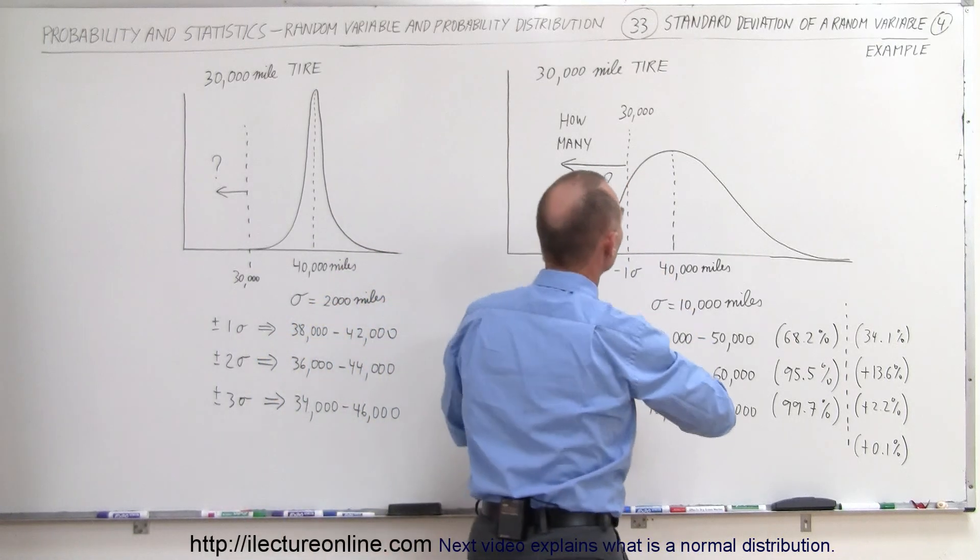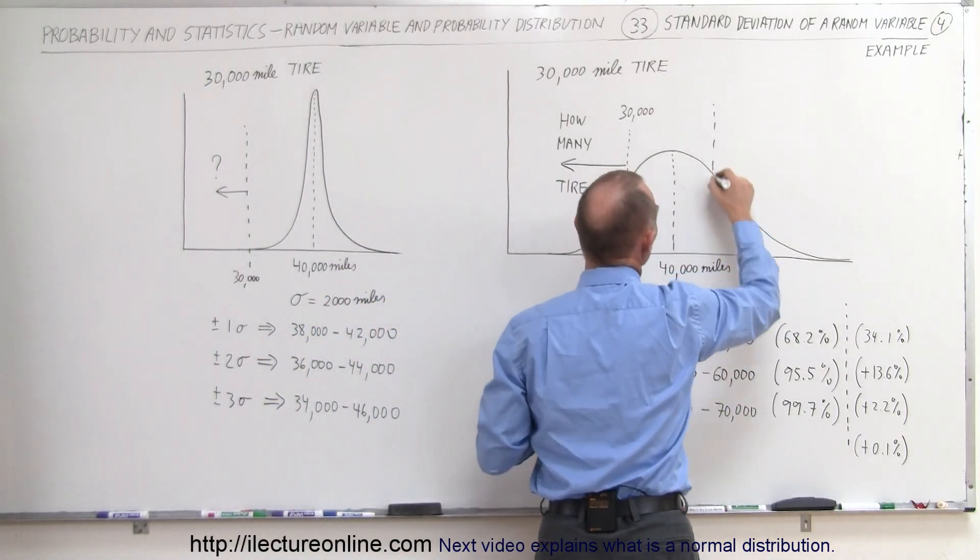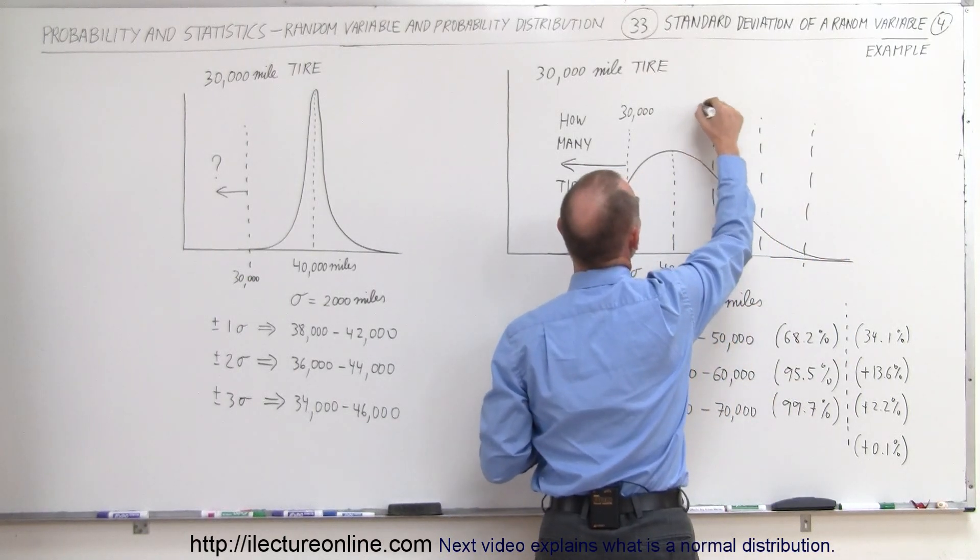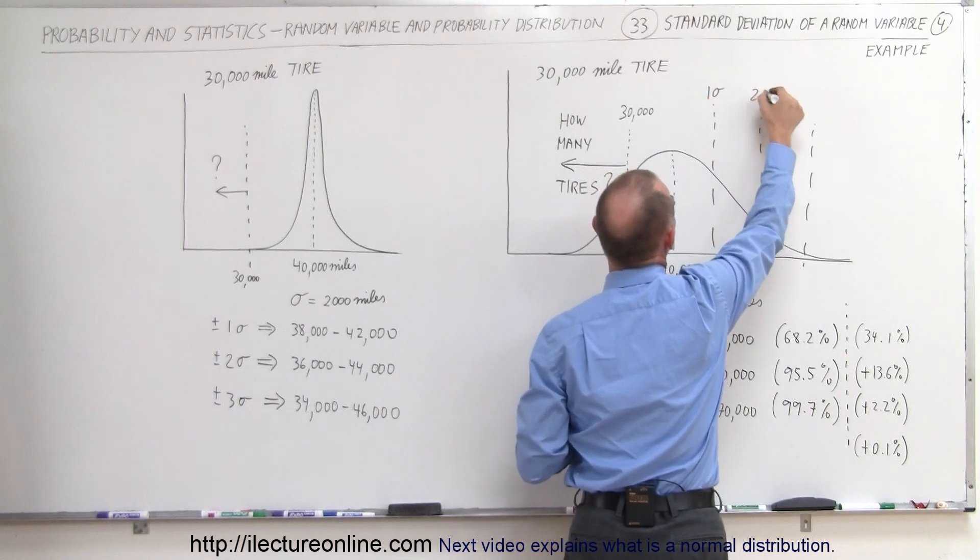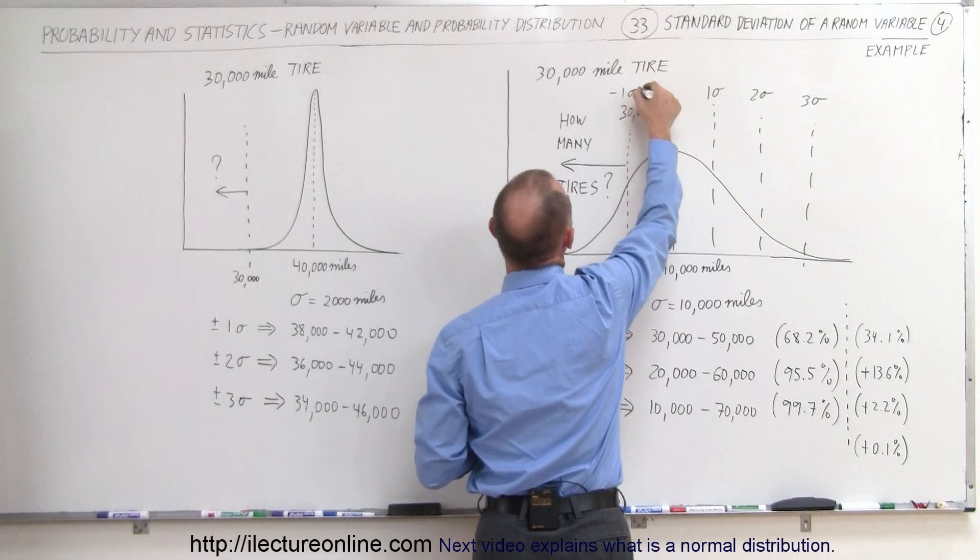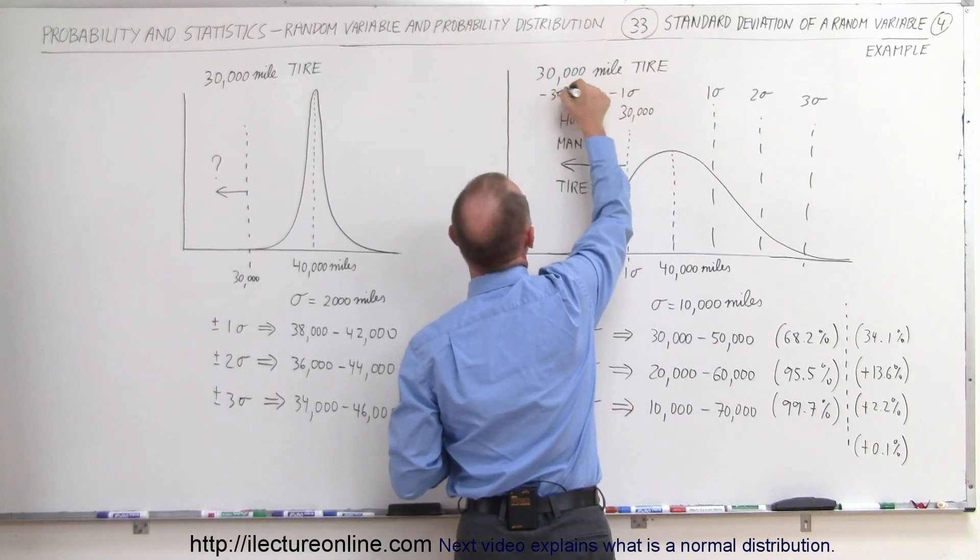So if we divide the graph into these regions of one sigma, two sigma and three sigma, so this is plus or minus one sigma, plus or minus two sigma, plus or minus three sigma. And also in this direction, minus one sigma, minus two sigma and minus three sigma.